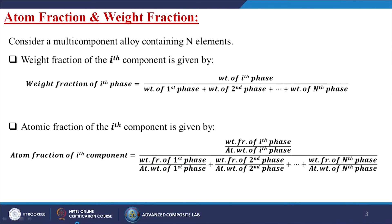Before proceeding, let us understand atom fractions and weight fractions. Suppose we are working on a multi-component alloy containing n elements. The weight fraction of the ith component is: weight of ith phase divided by the sum of weights of all phases from 1 to n. The atomic fraction of the ith component equals the weight fraction of the ith phase divided by its atomic weight, divided by the sum of (weight fraction divided by atomic weight) for all phases from 1 to n.